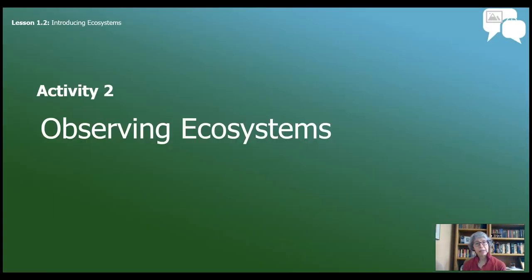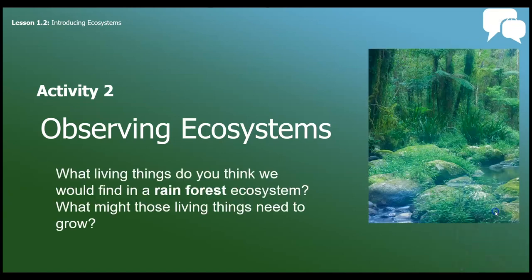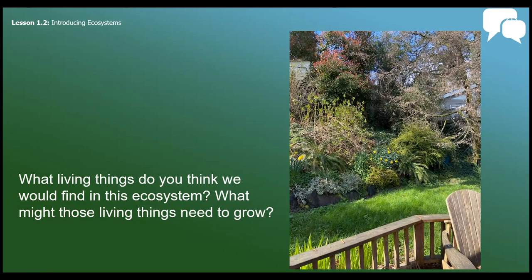Our second activity out of three today is to take a step back and observe some ecosystems. In video one, we took a look at a rainforest ecosystem and thought about this question: what might those living things need to grow in this ecosystem? I also suggested that you can look outside your window and take a look at the ecosystem that you live in. So let's do that with my back door — what living things do we think we could find in this ecosystem?